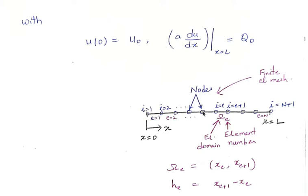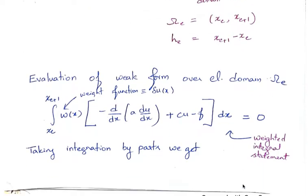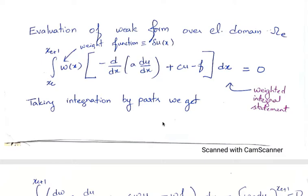For a two-noded element we will have N plus one total number of nodes. An element omega_e has its domain going from x_e to x_{e+1}, with h_e being the size of the element, defined as x_{e+1} minus x_e. Once you discretize the domain, the next step in FEM proceeds through the same standard steps.